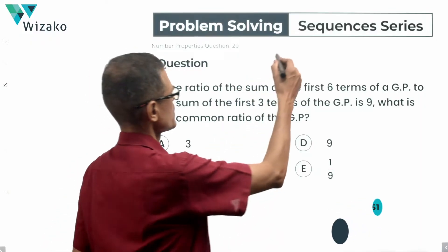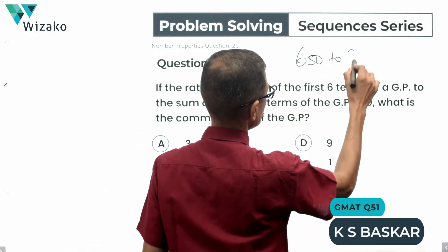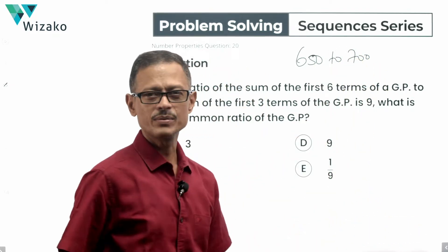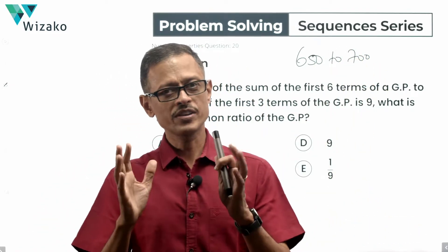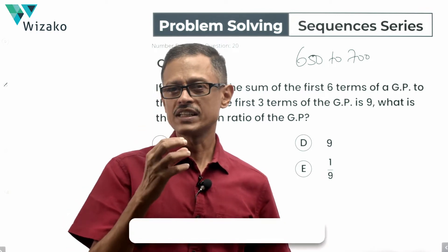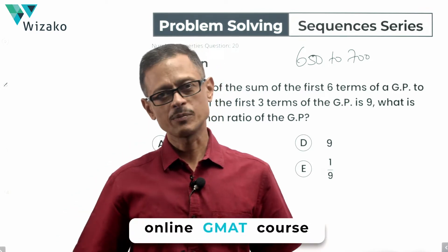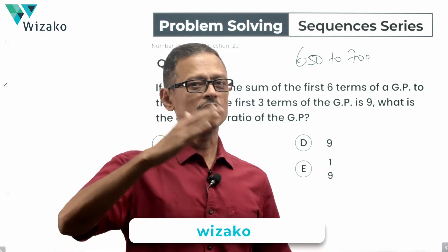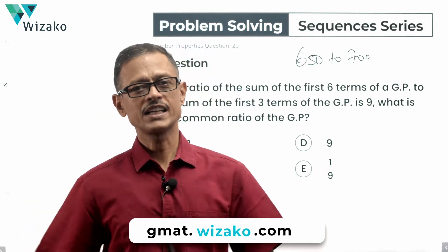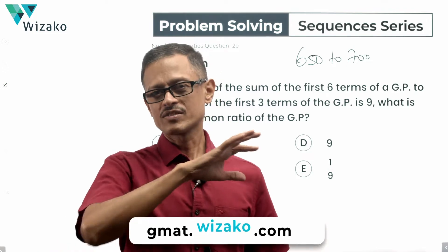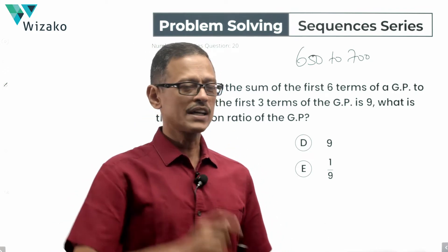This is a medium difficulty question — a GMAT 650 to 700 level problem solving question in sequences and series. The concept tested is geometric progression, specifically computing the sum of the first n terms. If you know the formula to compute the sum of the first n terms of a geometric progression, this question becomes very straightforward.